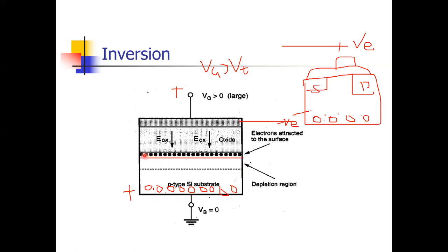Why is it called inversion? This particular region has only minority carriers — only electrons. This is a whole P-type substrate where majority carriers are holes, but this particular region has only electrons. So this particular region behaves like N-type, because in N-type, electrons are the majority carriers. That's why it's called inversion — it is not behaving like P-type, it is behaving like N-type. And that is called channel creation.